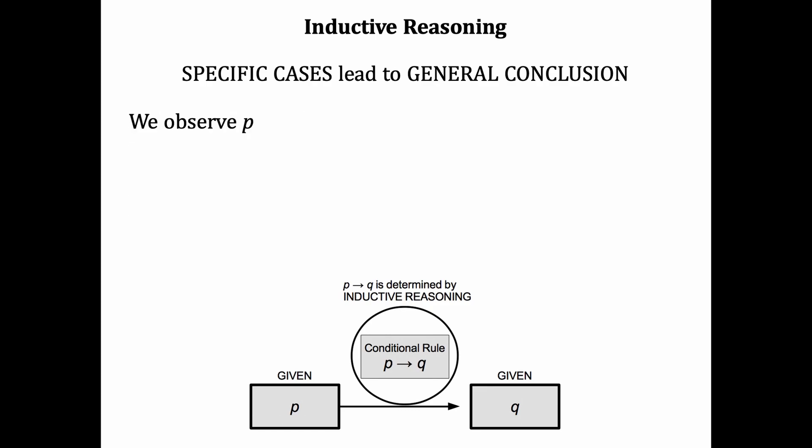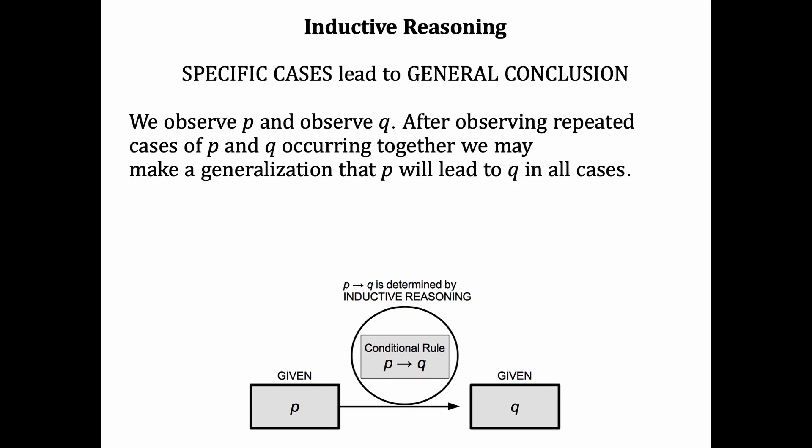First, we observe P, and so it's given, and we observe Q, and that's given as well. We observe P, and observe Q. And repeat this process many times. After observing repeated cases of P and Q occurring together, we may make the generalization that P will always lead to Q in all cases. So, the conditional statement P implies Q is inferred through inductive reasoning.